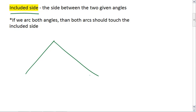So if we have a triangle, we're given angle 1 and angle 2.